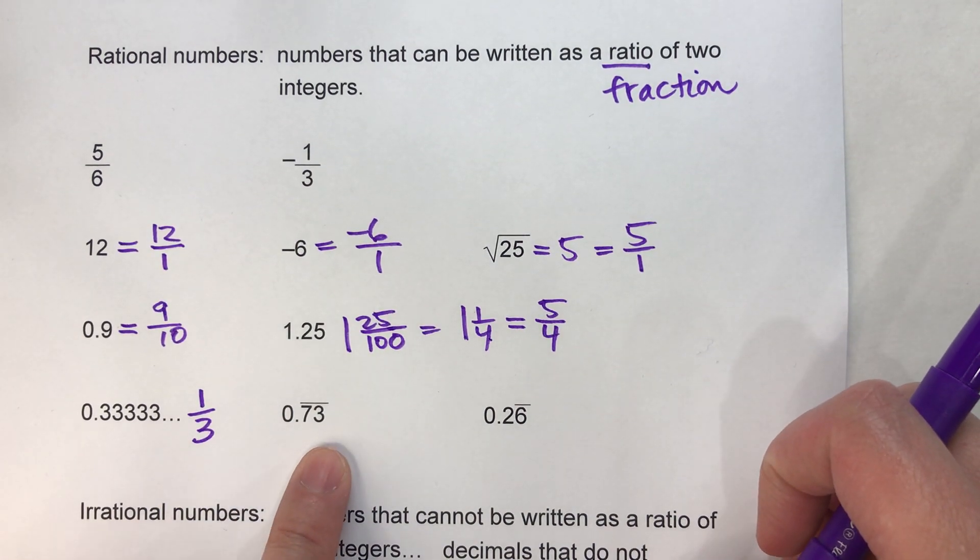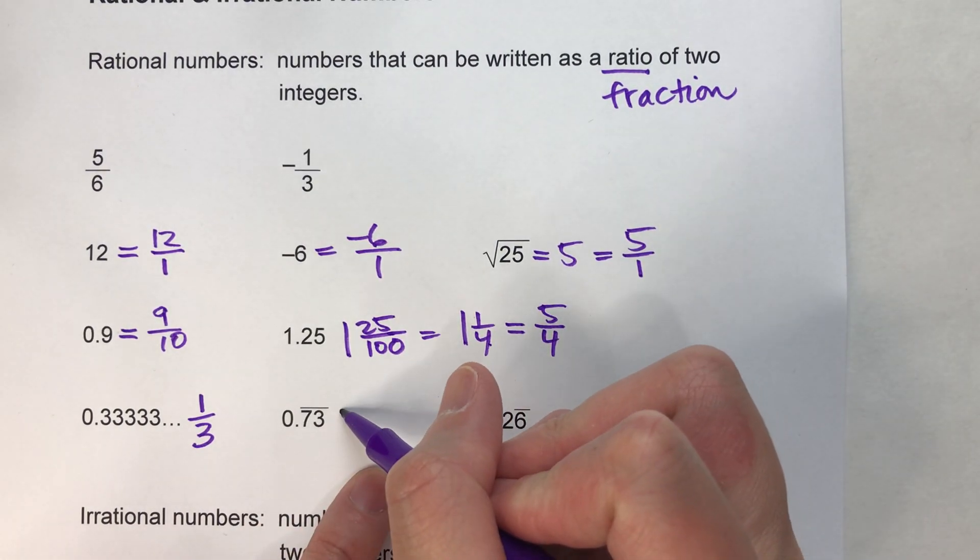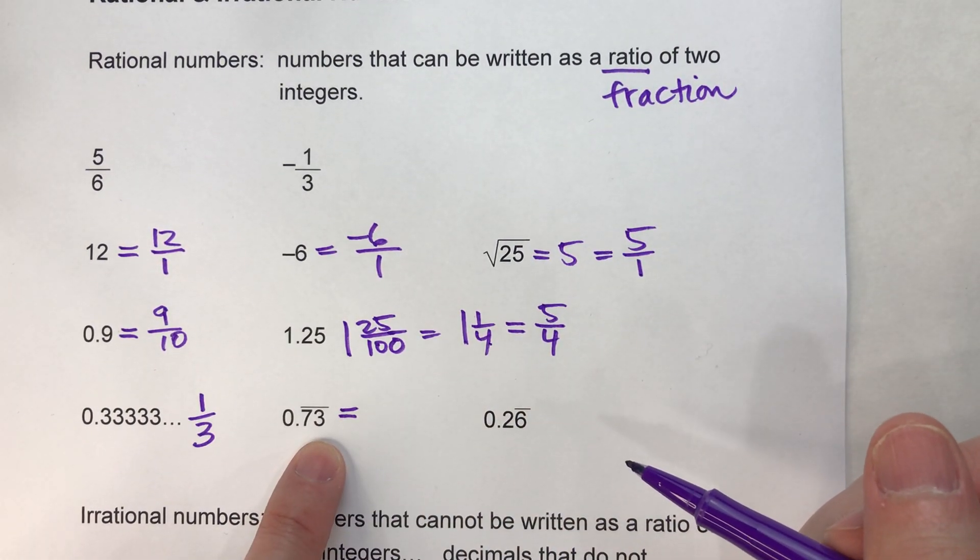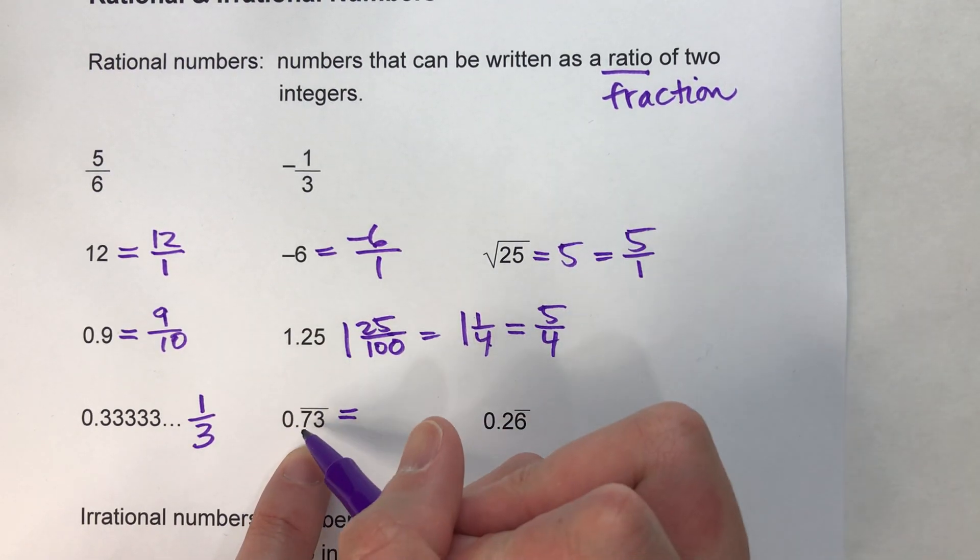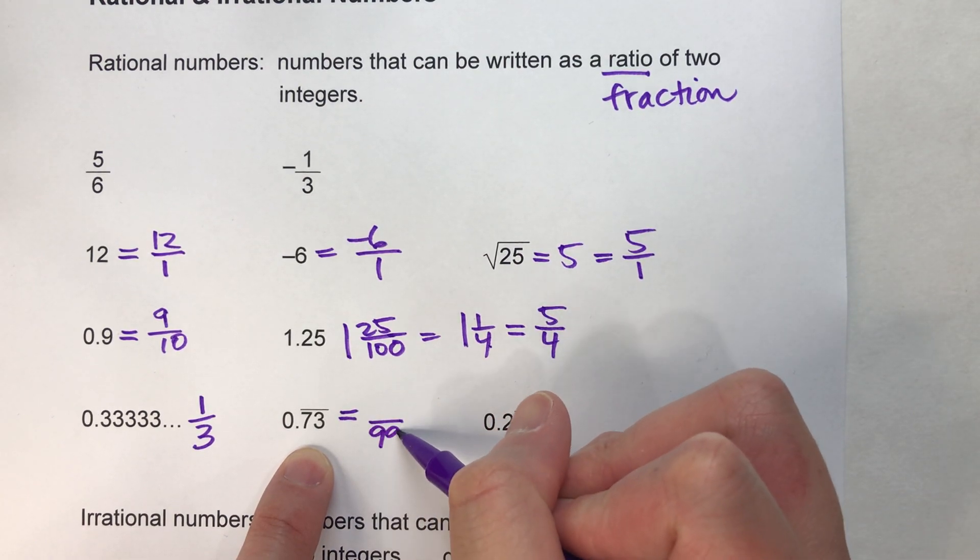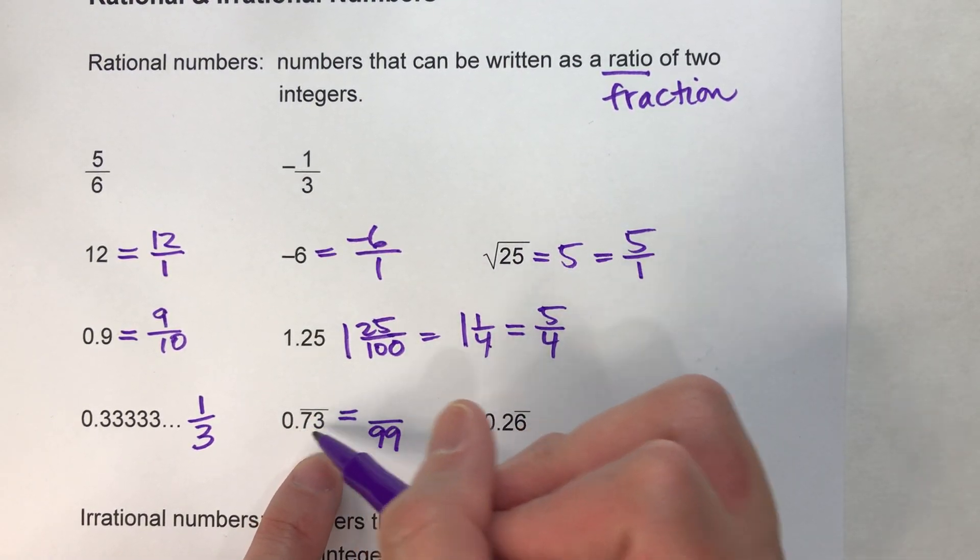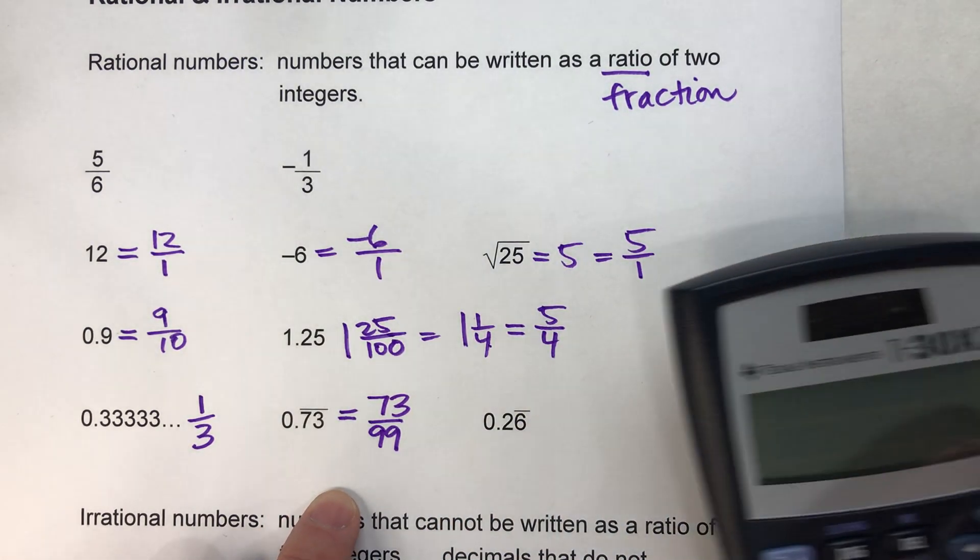0.73 repeating. This is 0.737373... And if you haven't watched my video, you can watch my video on how to change this into a fraction. There are two digits repeating, so I know that the denominator is 99. And then I take those two repeating digits and stick them on top. It's 73/99.